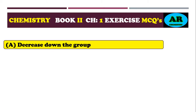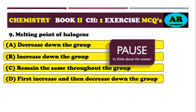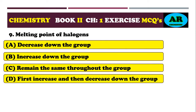MCQ 9: melting point of halogens — option alpha: decreases down the group, option beta: increases down the group, option charlie: remains the same throughout the group, option delta: first increases then decreases down the group. The correct option is beta — melting point increases down the group.